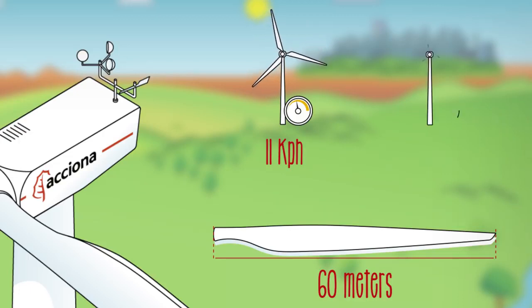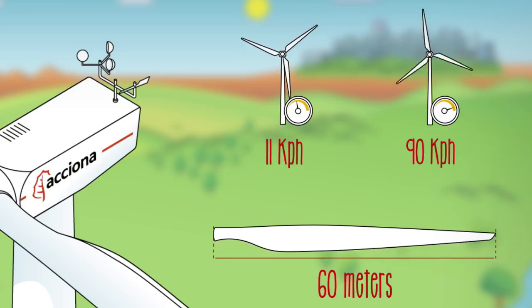With very strong winds, above 90 kilometers per hour, the blades are placed in the feathered position and the turbine stops spinning for safety reasons.